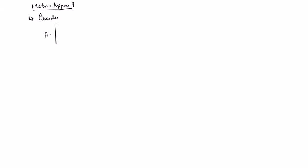So consider this matrix. I want to do one that's bigger than the previous one, so we can think about these as points in five-dimensional space. So: 1, 3, 5, 6, 6, 2, 4, 4, 4, 3, 3, negative 1, 1, 1, 1, 0, and then a bunch of twos.